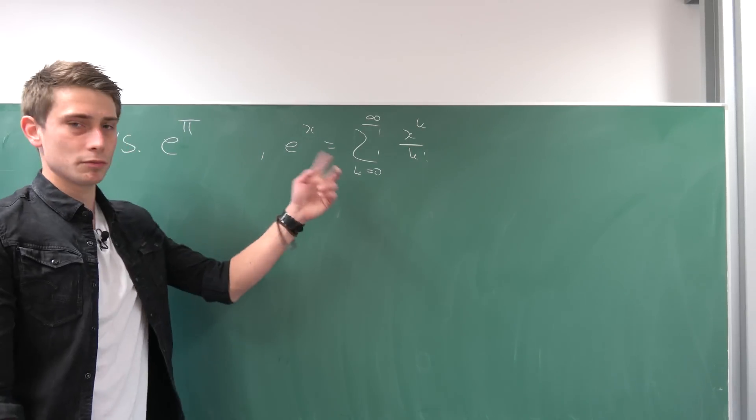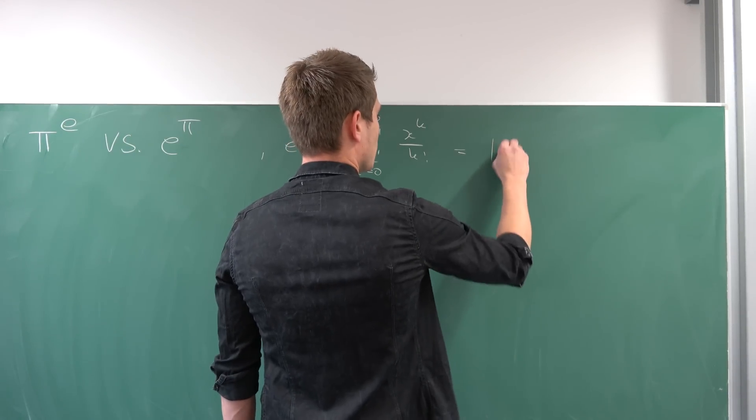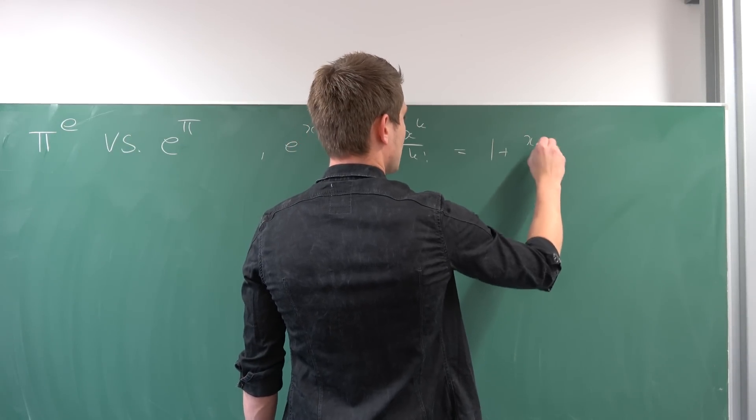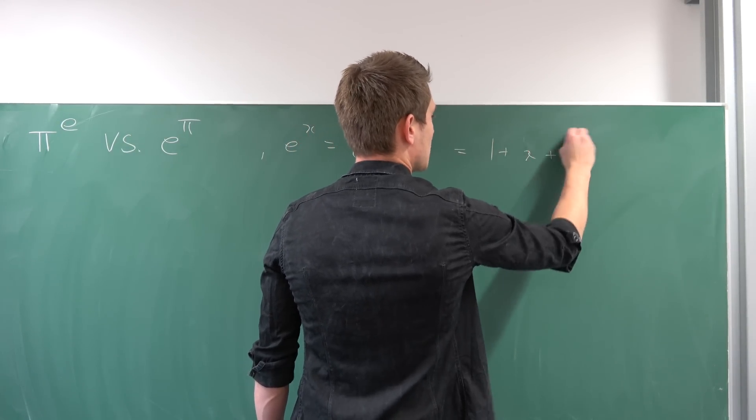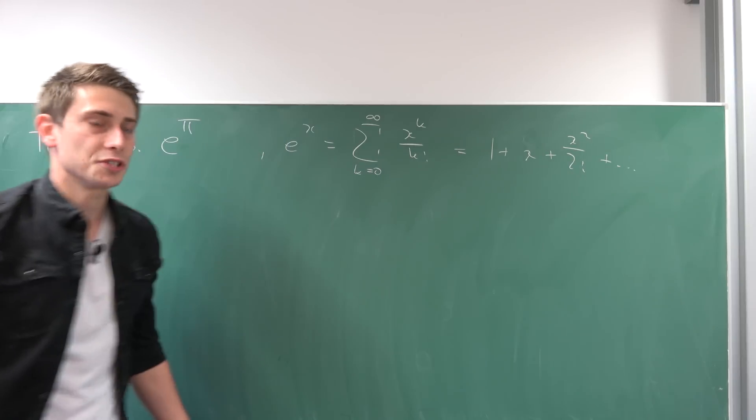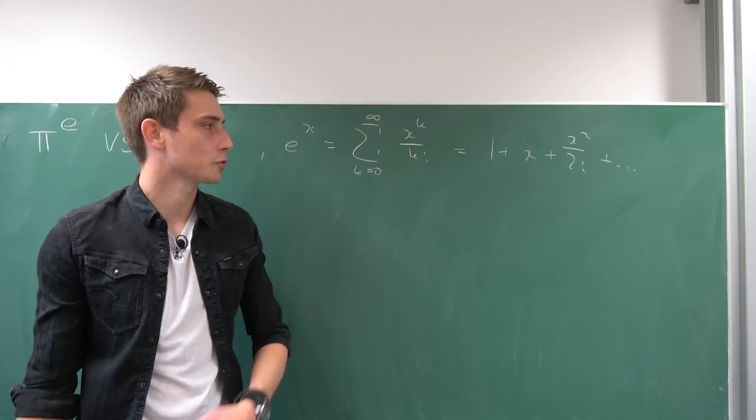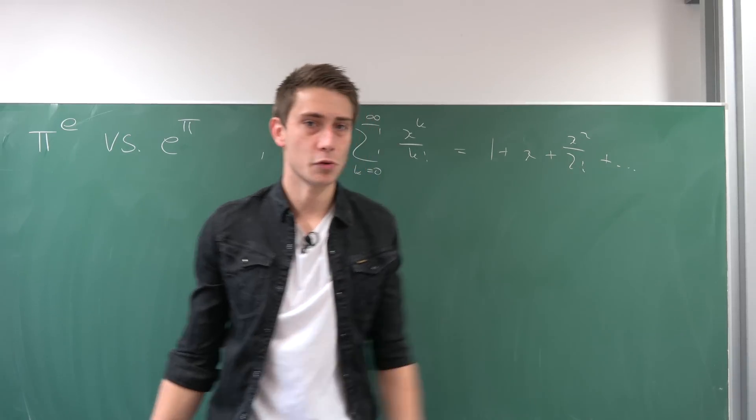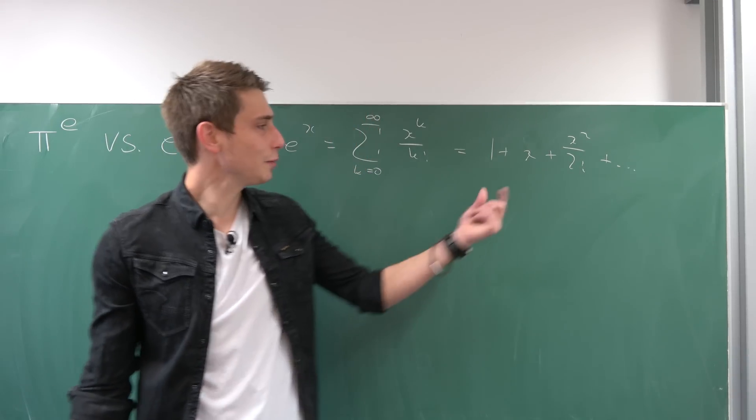And actually we can expand this out a little bit. So this is nothing but 1 + x plus x² over 2 factorial plus dot dot dot. And you see today we are not going to give a shit about this tail right here. We are just going to take a look at a little partial sum right here.